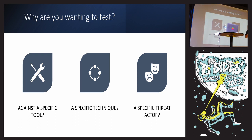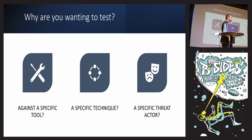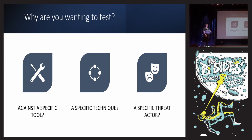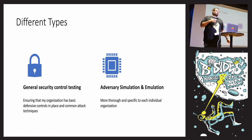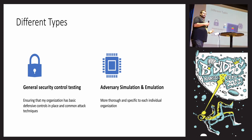Depending on how mature you are as an organization, that may all depend. I recommend first just trying to test the basics if you're just getting started. More mature organizations may be looking at Charming Kitten, APT 34, or other threat actors they need to defend against because they're in that vertical or industry. There are different types of testing, and it depends on your maturity and where you want to focus. General security testing involves basic attack vectors like privilege escalation or creating a domain admin account.